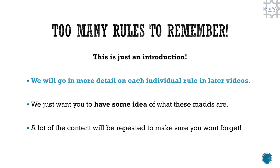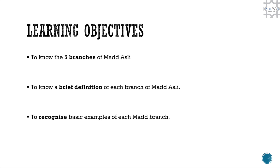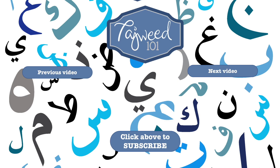Now you may think there are too many rules to remember, but this is just an introduction. We will go into more detail on each individual rule in later videos. We just want you to have some idea of what these mads are. A lot of the content will be repeated to make sure you won't forget. So what have we learnt in this lesson? We know the five branches of mad asli, we know a brief definition of each branch, and we can recognise the basic examples of each mad branch. Hope you have benefited from this lesson. Keep seeking knowledge. Ma'a salama.